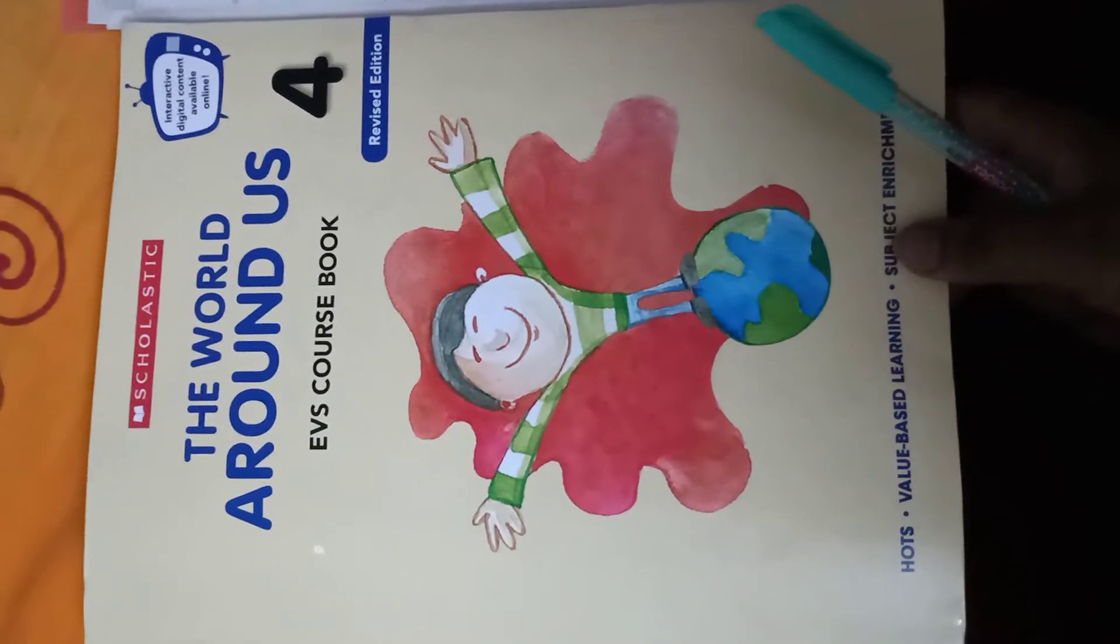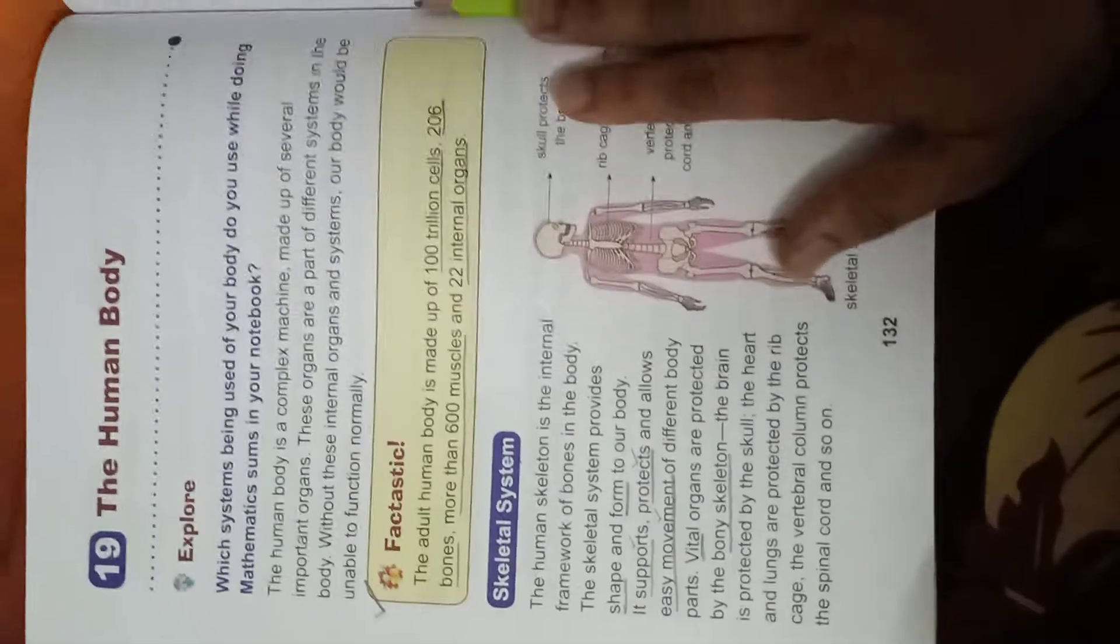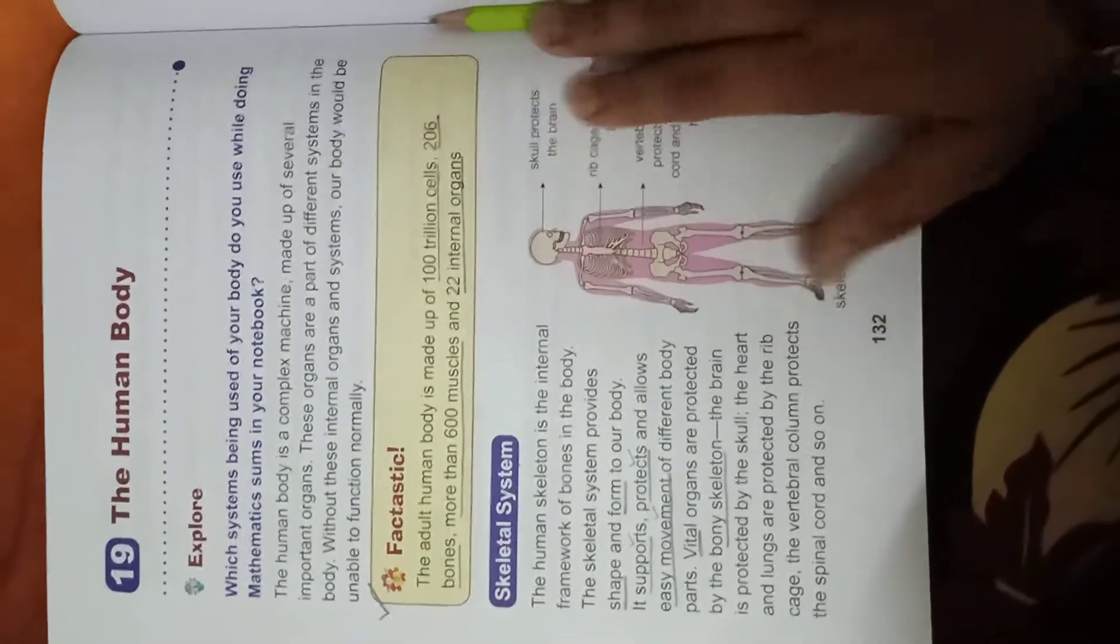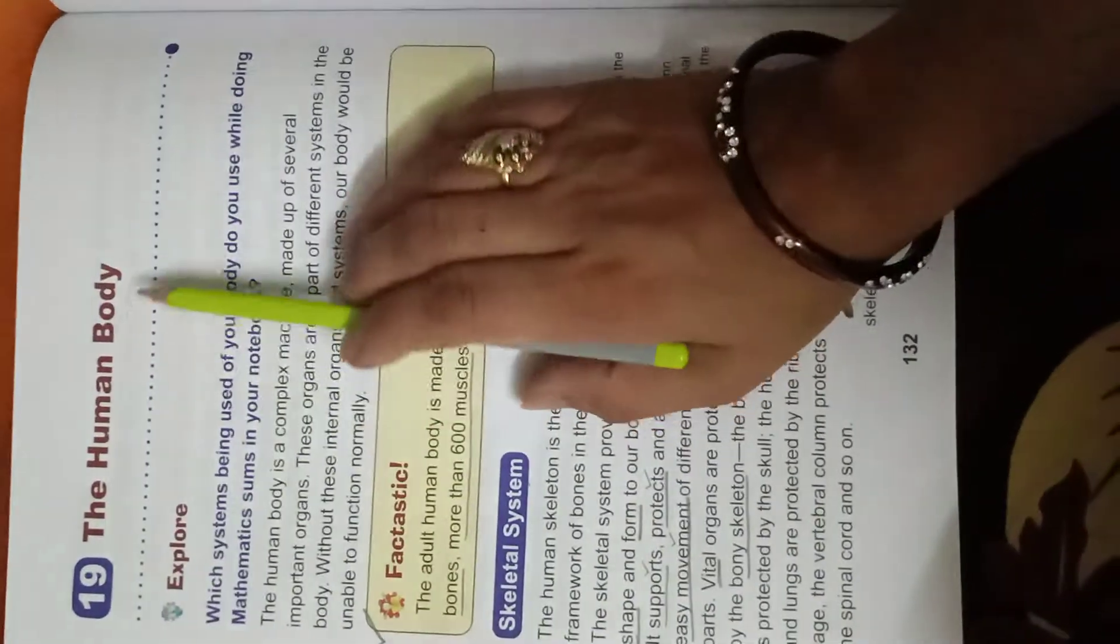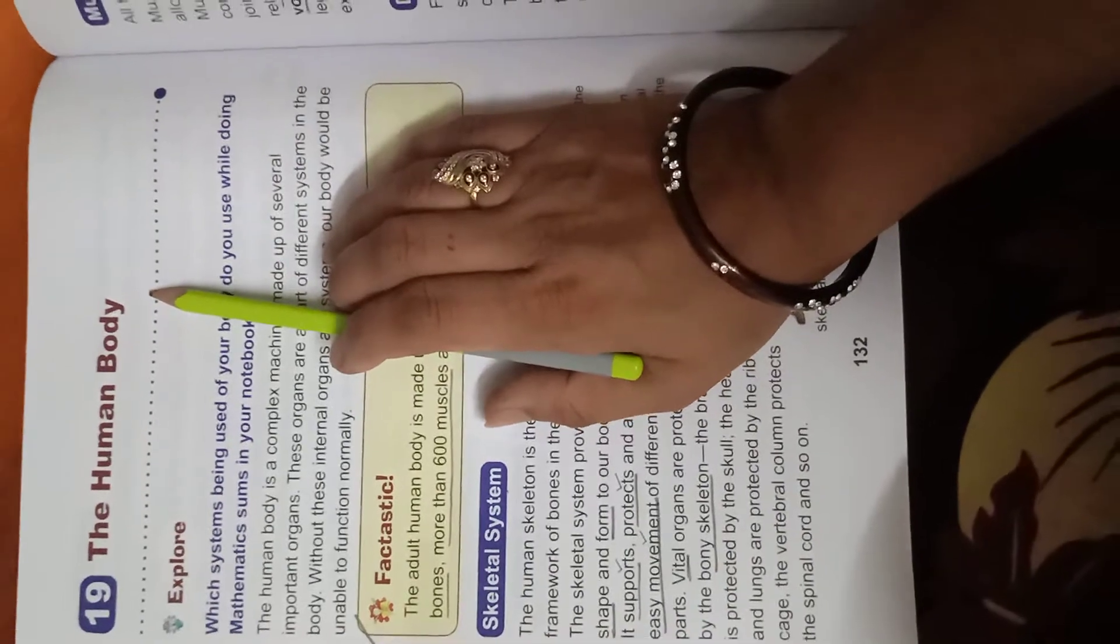So open your book at page number 132. This is our new chapter, Lesson 19: The Human Body. Let's start it.